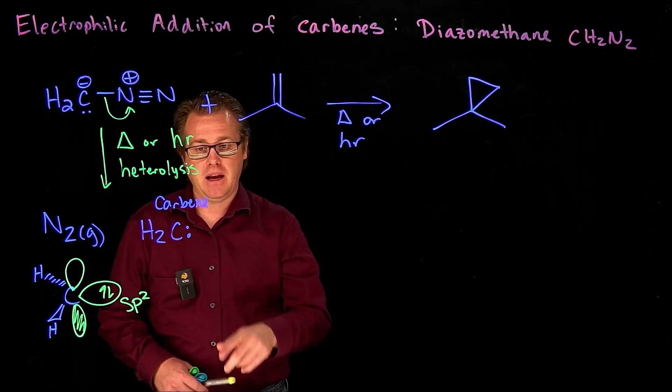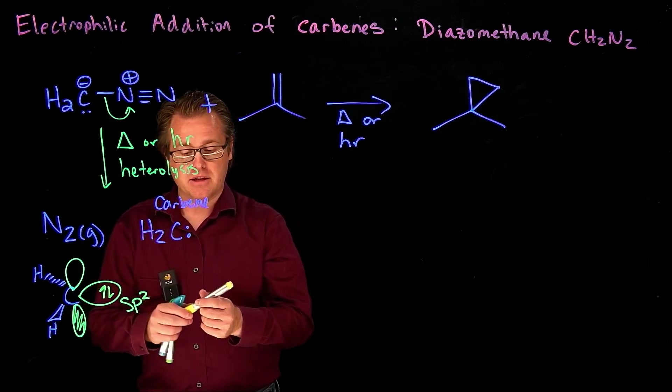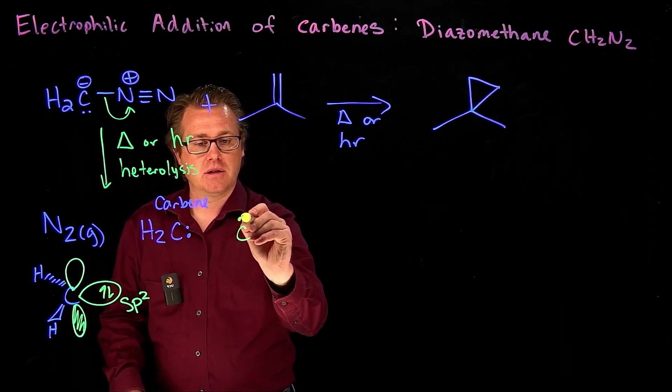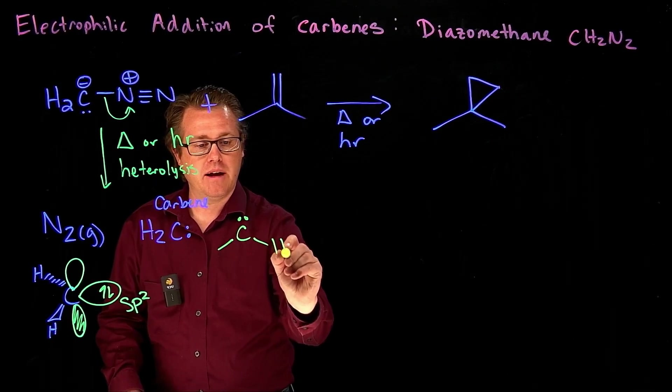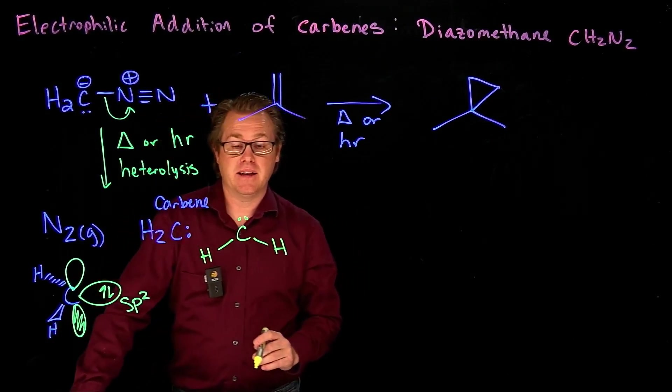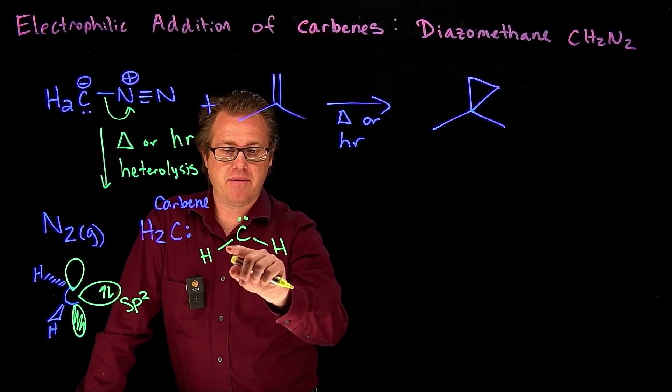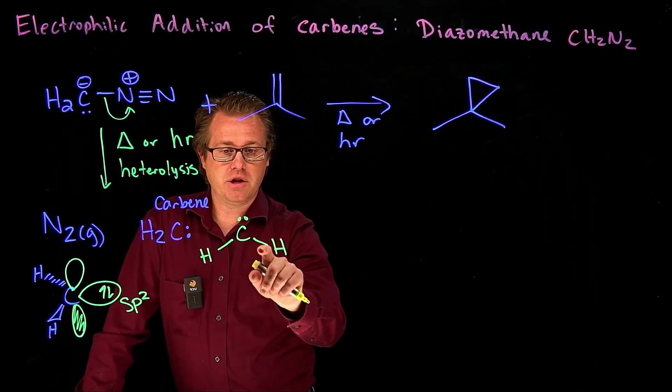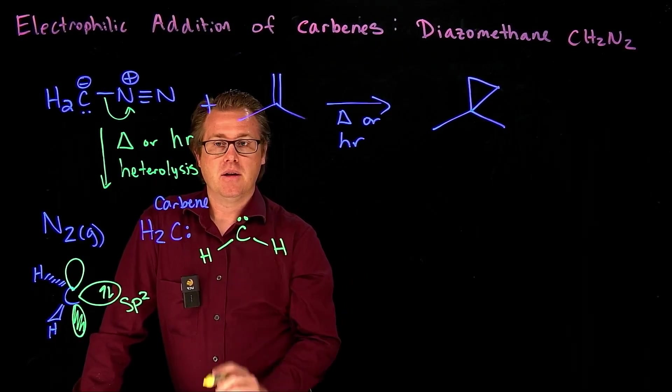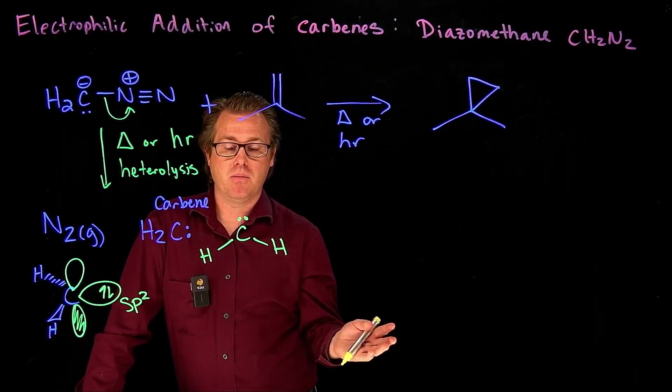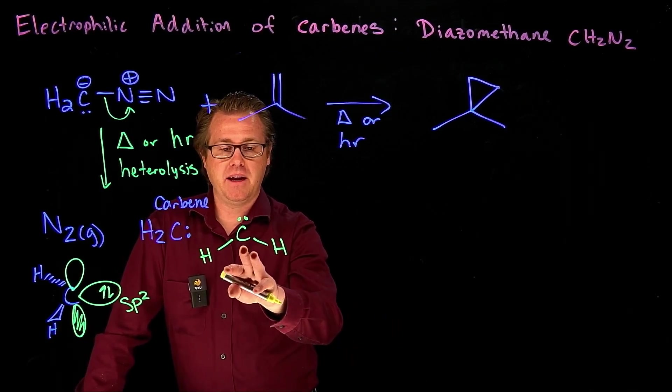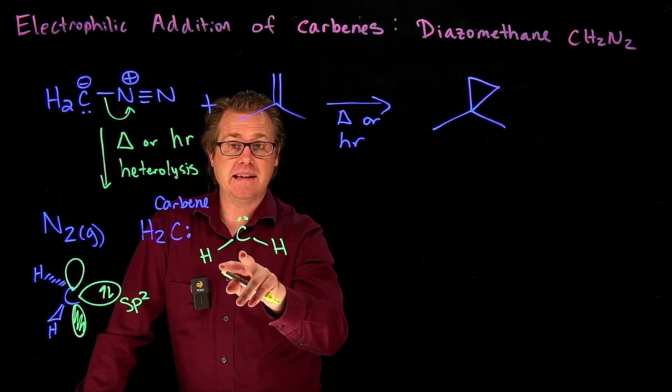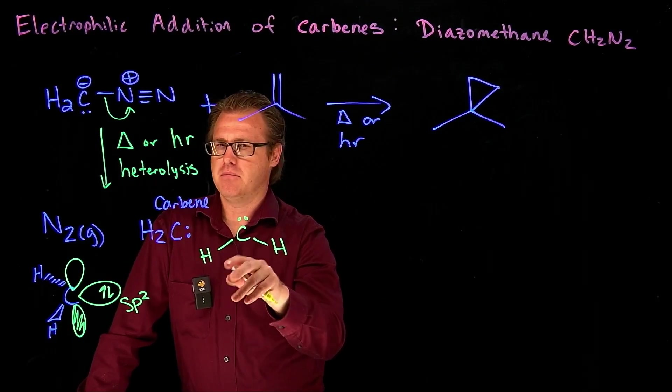So what we have is this lone pair that you see right there is in that sp2 hybridized orbital. And so carbenes, when you take a look at its Lewis structure, you see it has a lone pair and two hydrogens right here. And when we calculate its formal charge, what do we see? We have two, one, two, three, four. So it has a formal charge of zero. So carbenes, even though they don't have their octet, they're still neutral. Interesting species.